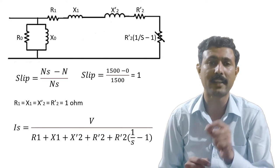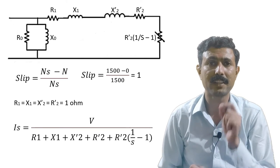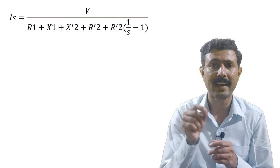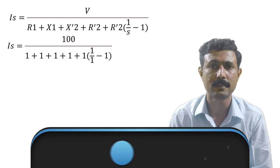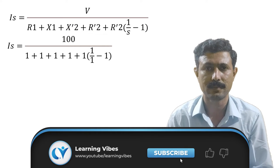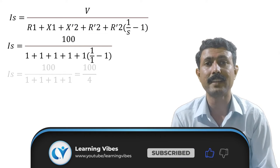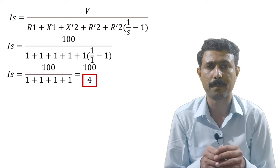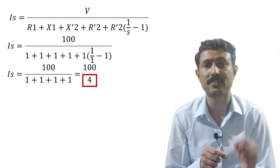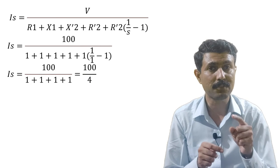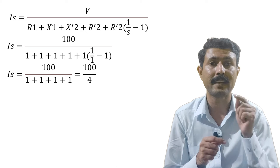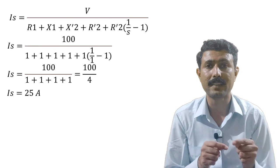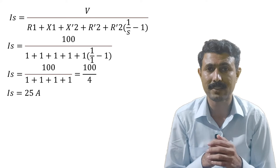For the initial condition with slip s = 1, placing this value into the current equation gives us a circuit with minimum resistance — only 4 ohms total. Because the resistance is minimum, we get maximum current at the initial period. The starting current in this example comes out to 25 amperes.